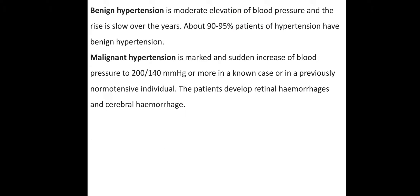Clinically, hypertension can be classified as benign or malignant. Benign hypertension is a moderate elevation of blood pressure where the rise is slow over time — for example, blood pressure gradually increasing over 5 to 10 years.